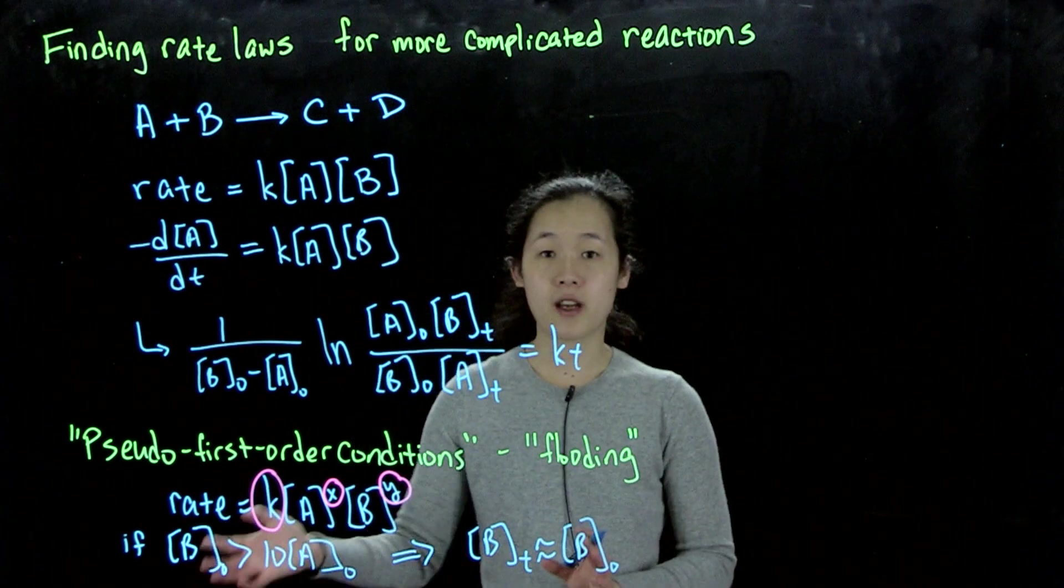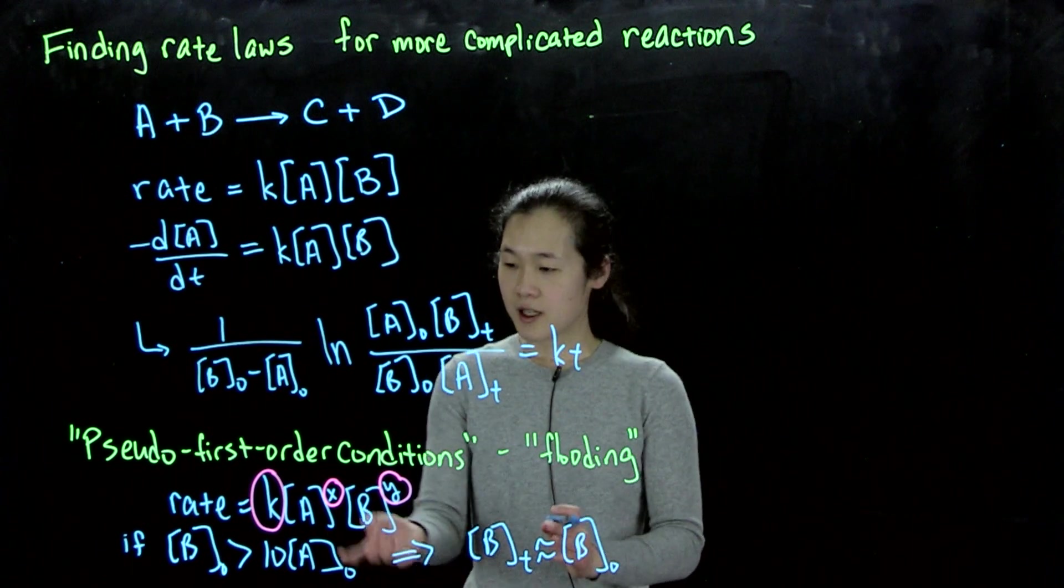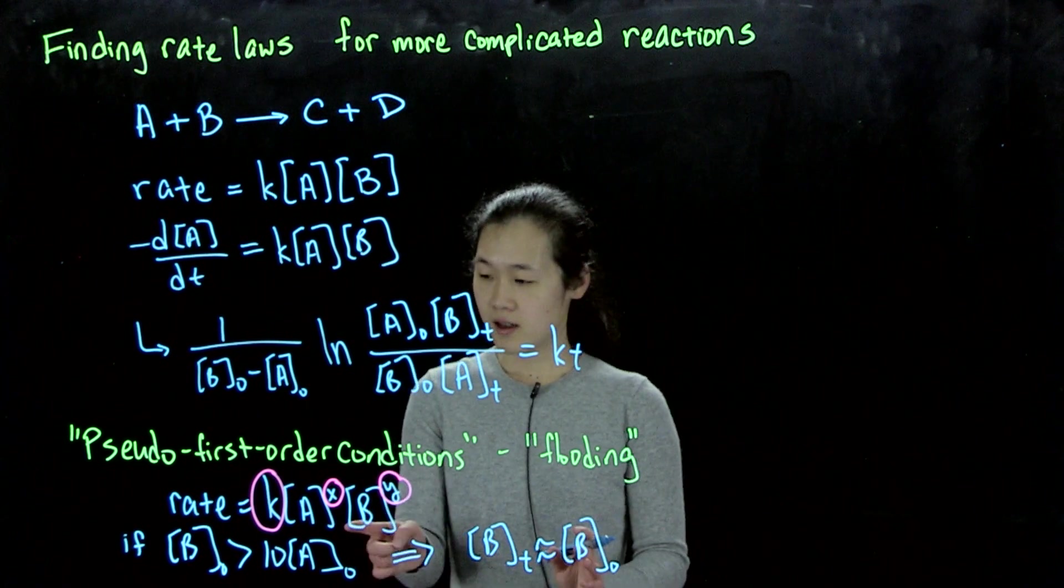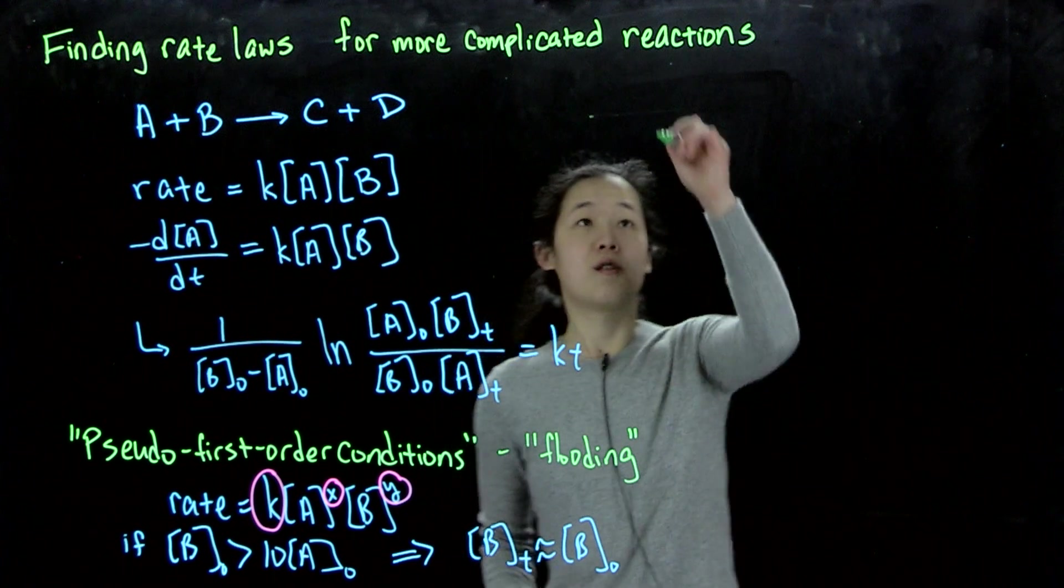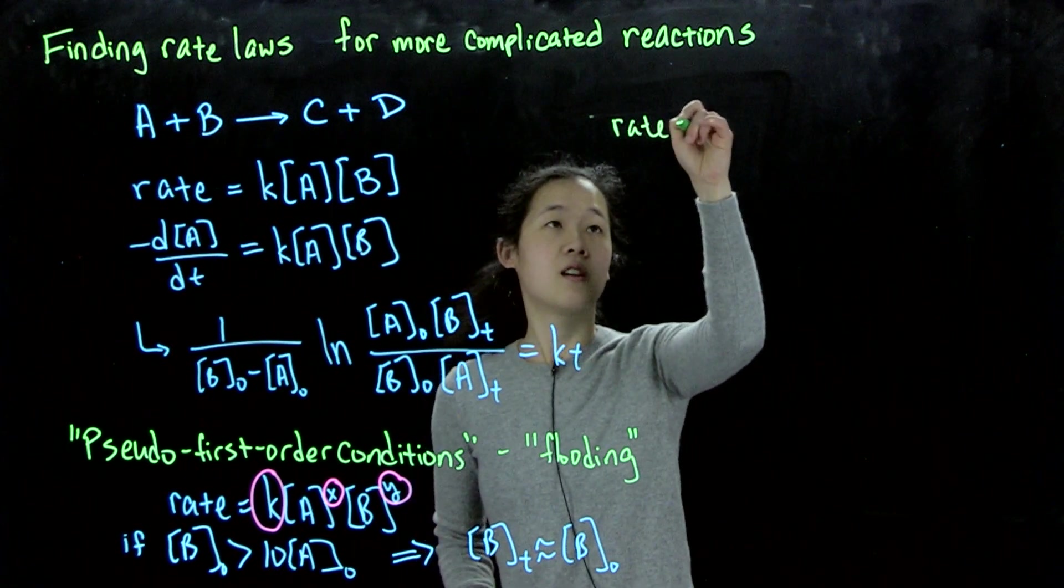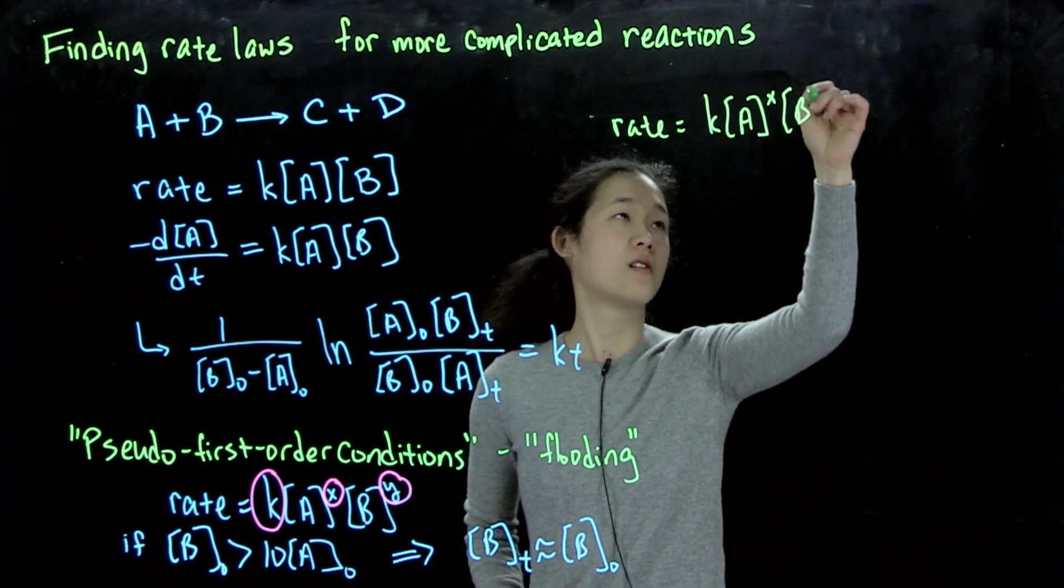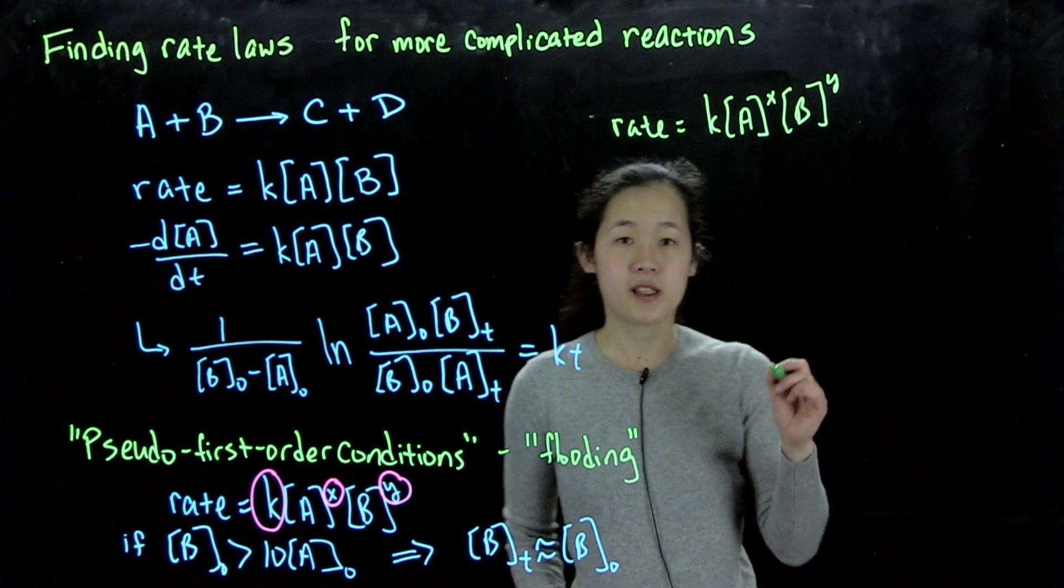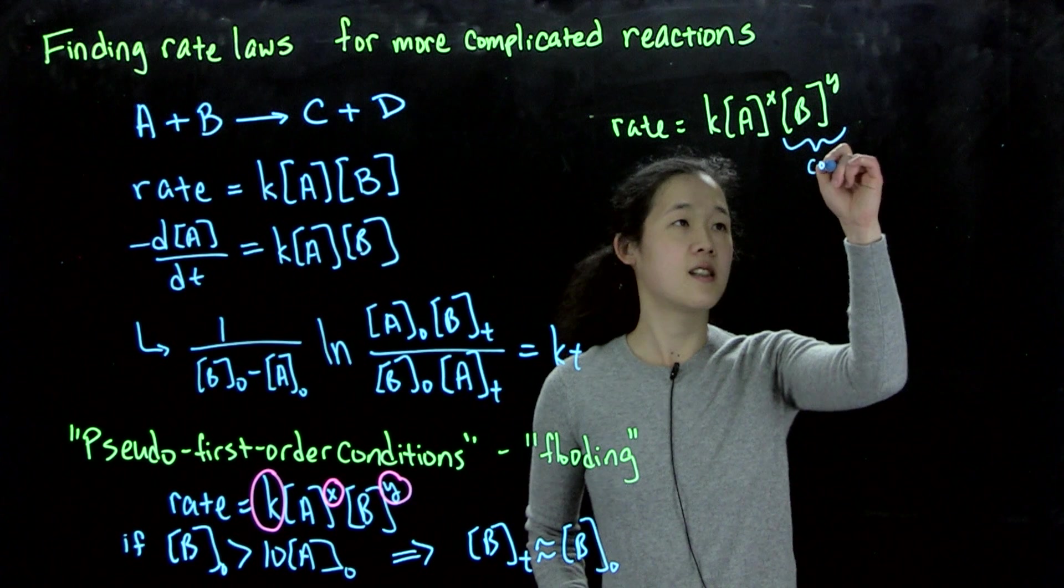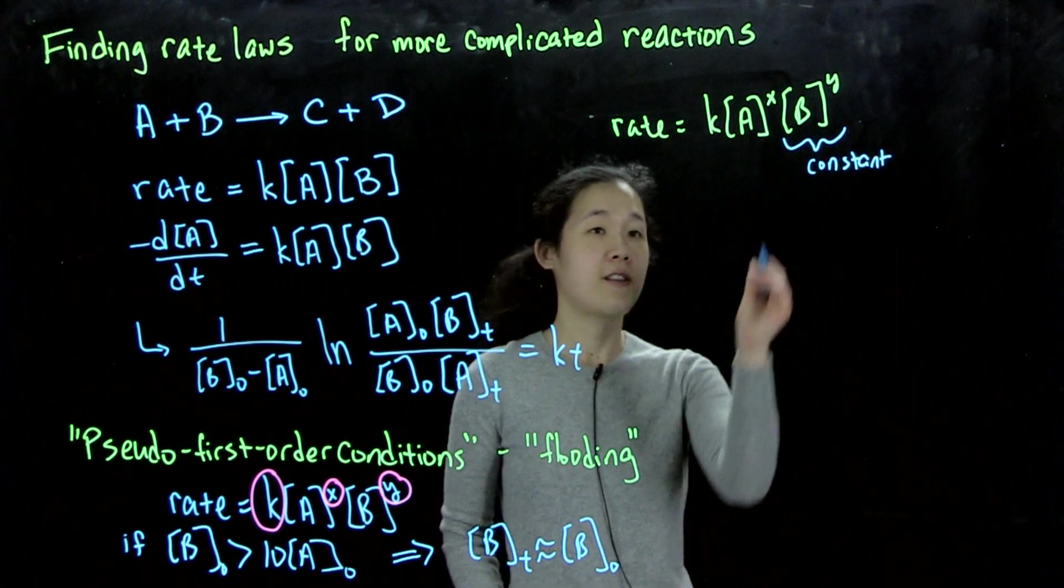That's because we have a huge excess. So this is what's called under pseudo-first-order conditions, because now if B at time T is approximately constant, what this gives us is our rate is going to be k times, and what we're saying is this is going to be constant, because again, we're flooding it. So what this gives us is, if this is constant, we can rearrange this expression.